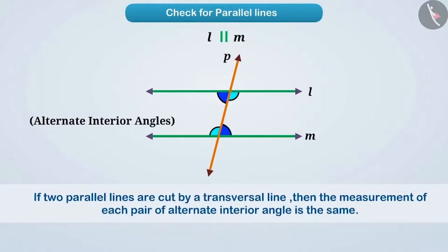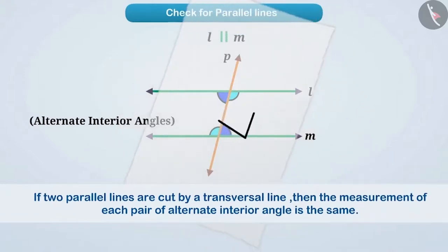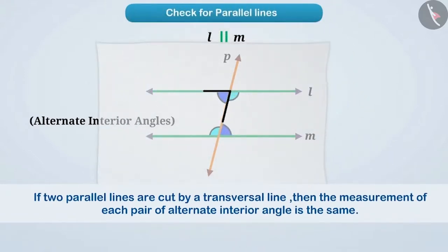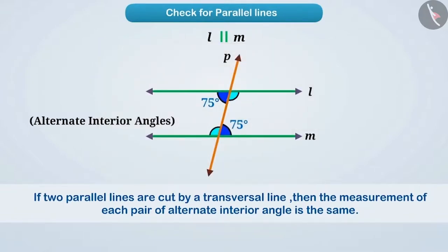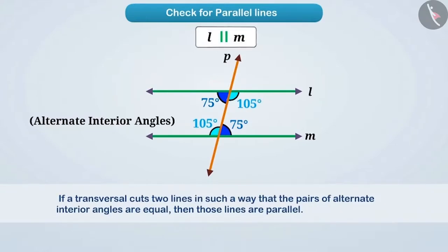You must remember that if two parallel lines are cut by a transversal line, then the measurement of each pair of alternate interior angles is the same. If we make this angle on a trace paper and place it at its alternate interior angle, the two angles cover each other completely — that is, their measurements are equal. This is true for all pairs of alternate interior angles. Since each pair of alternate interior angles is equal, line L and line M are parallel. If a transversal cuts two lines such that the alternate interior angles are equal, then those lines are parallel.